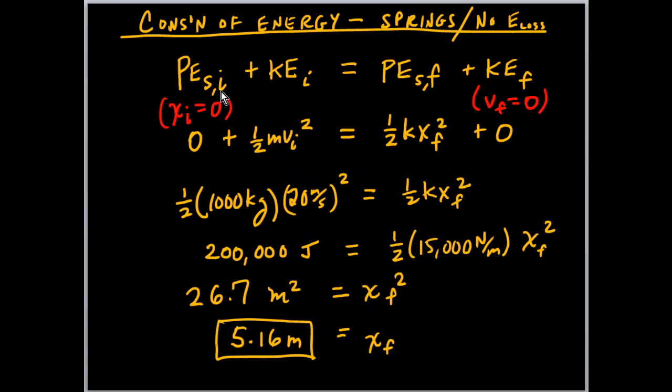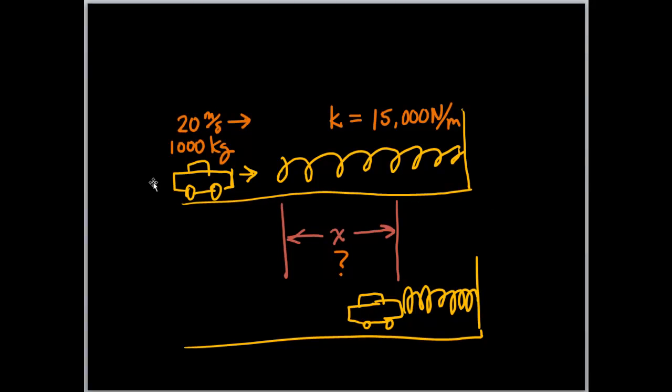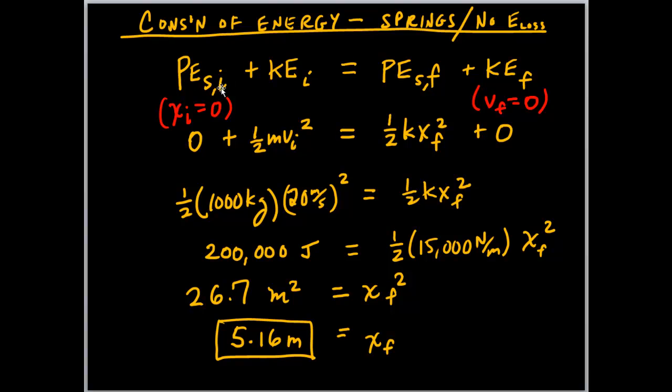In this and all the problems we are going to start by conserving energy, which means we take the initial conditions. The total energy is potential plus kinetic. Now with the potential, when you have objects that are staying on one level in terms of the height, you have no gravitational potential energy to deal with. So the only potential energy we have in this problem is spring potential.